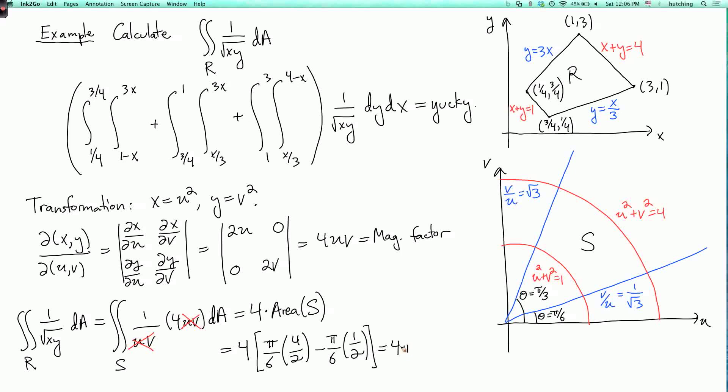So I have 4 pi times 2 over 6 is 1 third. And here I have minus 1 twelfth. 1 third minus 1 twelfth is 1 fourth. So the final answer is pi.